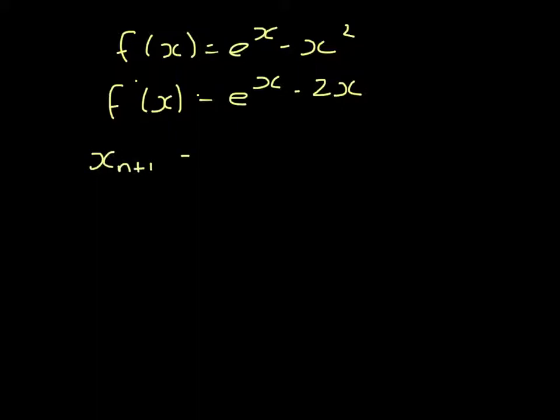Newton-Raphson states that a better solution, x_{n+1}, is x_n minus f of x over f dash of x.